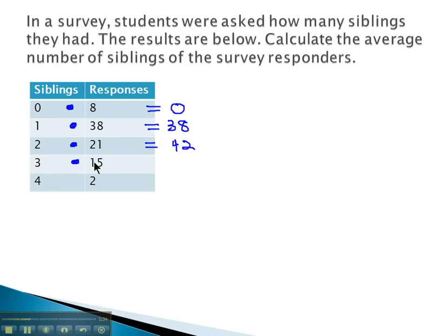3 times the 15 people who have 3 siblings gives us 45. And finally, 4 times 2 gives us 8.